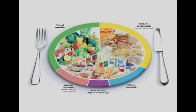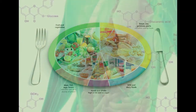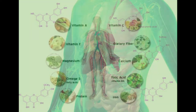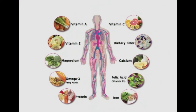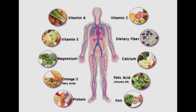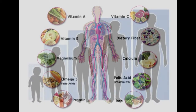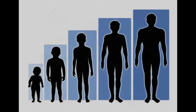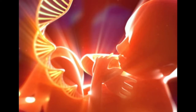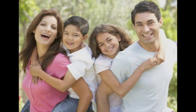Nutrition has been defined as food at work in the body. It includes everything that happens to food from the time it is eaten until it is used for the various functions in our body. Nutrients are chemical components present in our food which are required in adequate quantities for various functions like growth, development, bodybuilding, reproduction, and to lead a normal and healthy life.